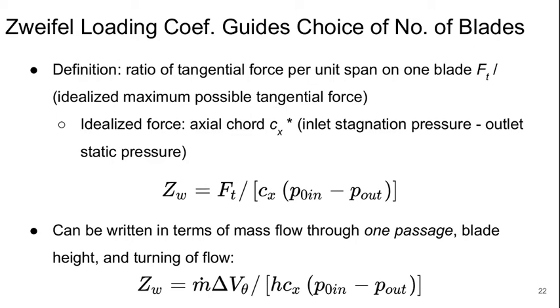The definition of this is the ratio of the tangential force per unit span on one blade, divided by an idealized maximum possible tangential force. This idealized maximum force is the axial cord, cx, times the difference between the inlet stagnation pressure and the outlet static pressure.